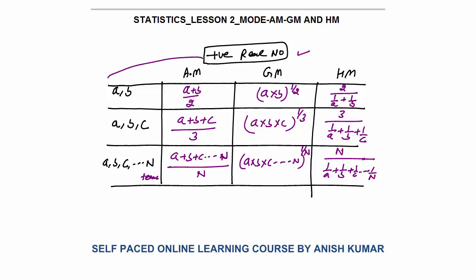For positive real numbers, always remember that whatever be the given numbers, arithmetic mean always greater than geometric mean and is always greater than harmonic mean. When they are equal, they are equal when the numbers are equal.